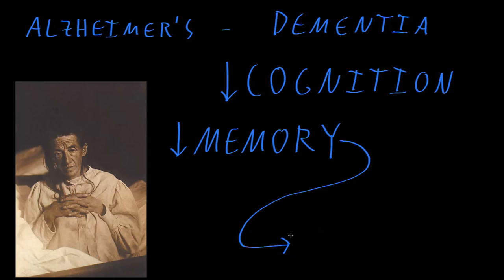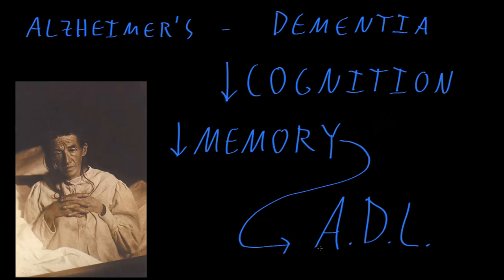At later stages, when Alzheimer's disease becomes most severe, patients lose the ability to perform what are called basic activities of daily living, or ADLs. These basic activities include things like toileting, bathing, dressing, and eating. These patients will eventually require full-time nursing care to attend all of their bodily needs because they won't be able to take care of those things themselves.